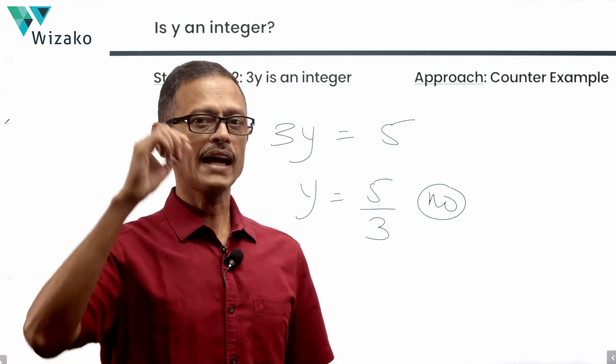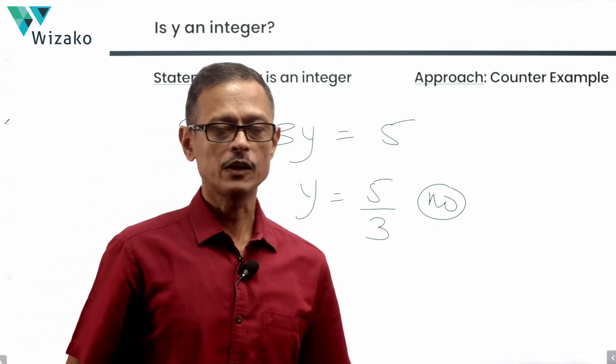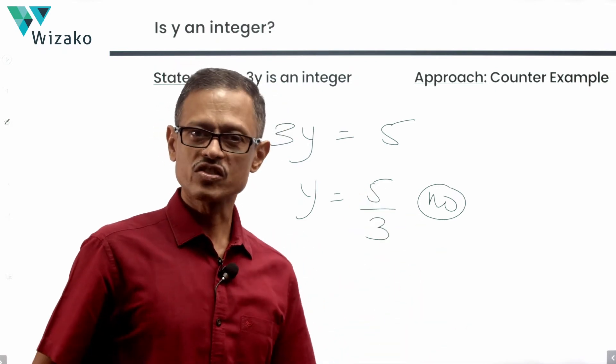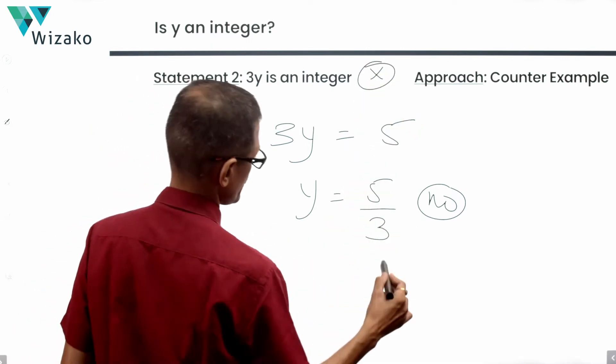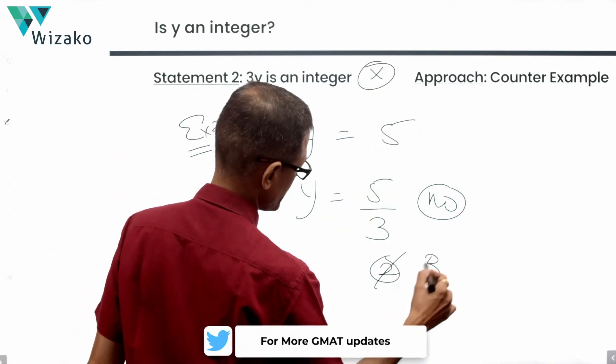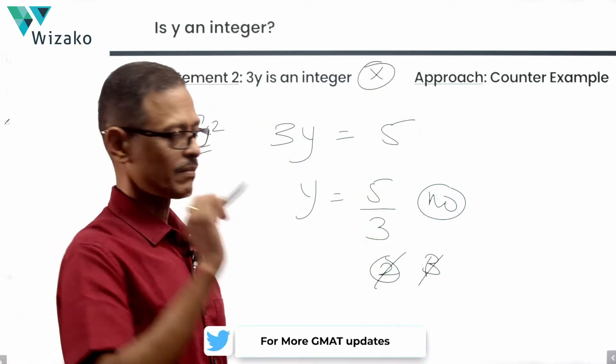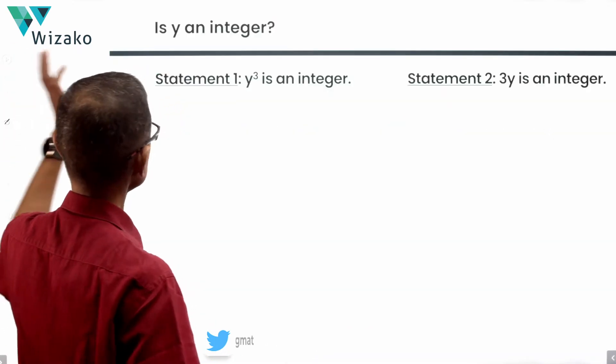In both cases, 3y happened to be an integer as mandated by statement 2. Statement 2 gives us a no, gives us a yes. We have a counter-example, which means 2 alone is also not sufficient. Rule out answer option B. The easier part of the question is done. Now, this is where we are.